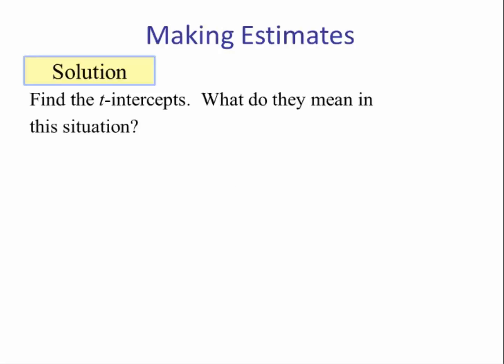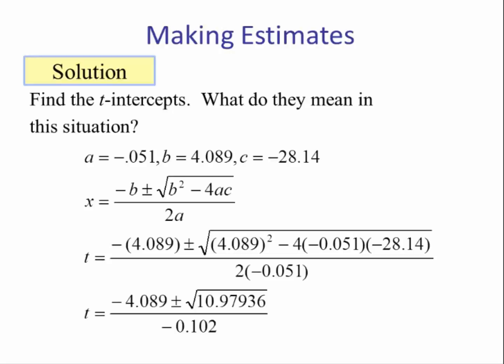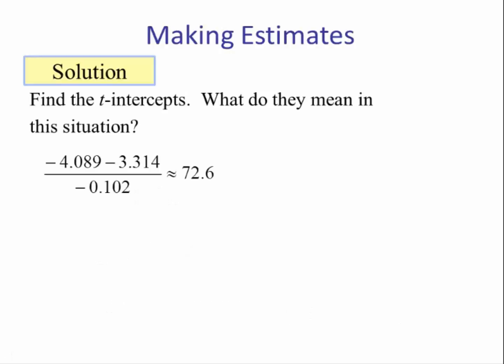To find the t-intercepts, what do they mean in this situation? t-intercepts means find the value of t when f of t is equal to 0. So now we have a quadratic equation equal to 0. That tells us our values of a, b, and c. Plug these into the quadratic formula. We get the expression negative 4.089 plus or minus 3.314, all divided by negative 0.102.